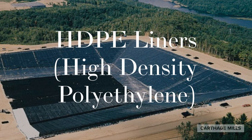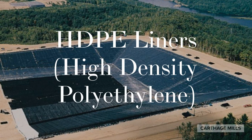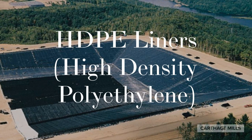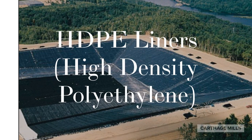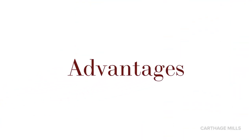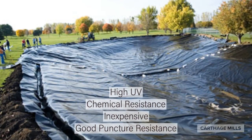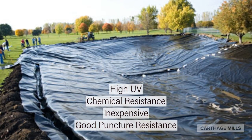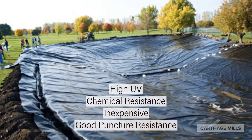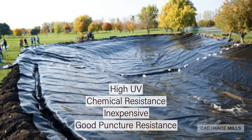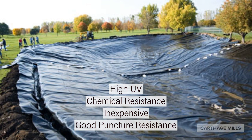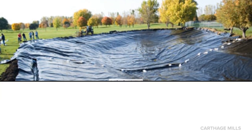One type of geomembrane liner is called HDPE, or high-density polyethylene. Some advantages of the HDPE liner include high UV resistance, good overall chemical resistance, inexpensive material cost, and good puncture resistance.